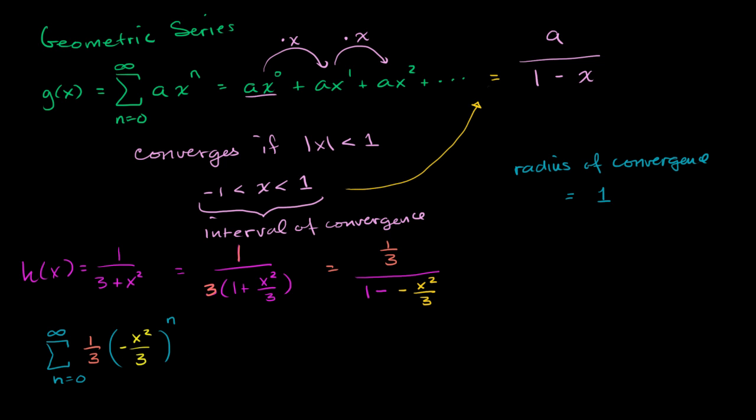The first term is 1/3 times all of this to the 0th power, so it's just 1/3. Each successive term is just the previous term times our common ratio. So 1/3 times negative x²/3 is going to be negative 1/9 x².